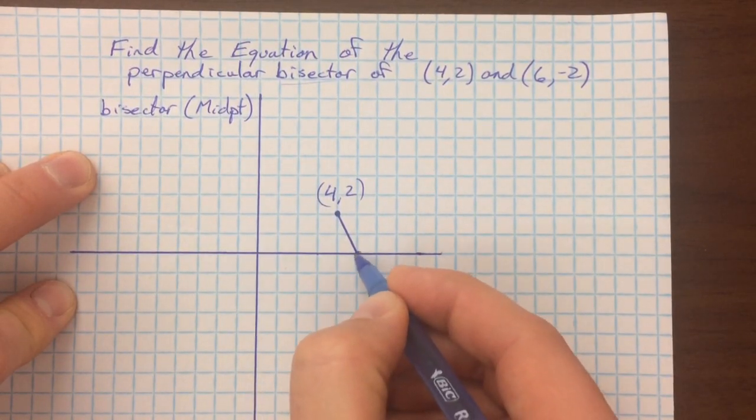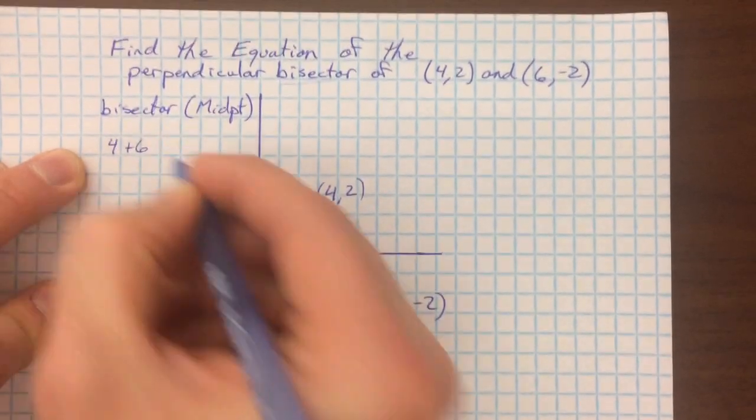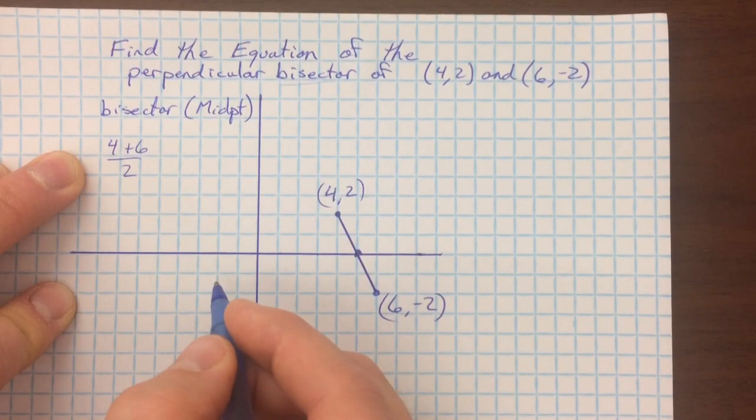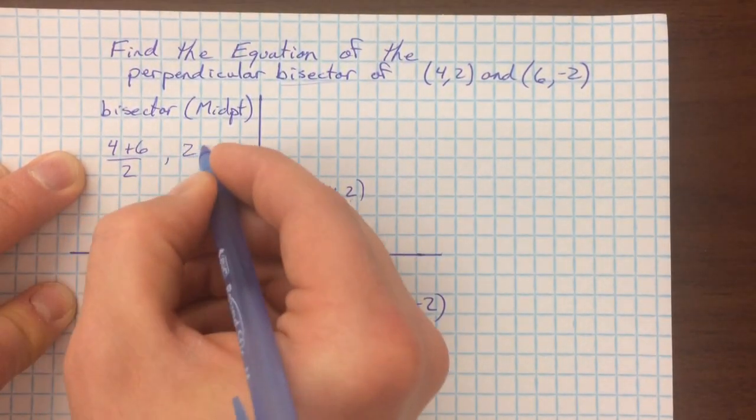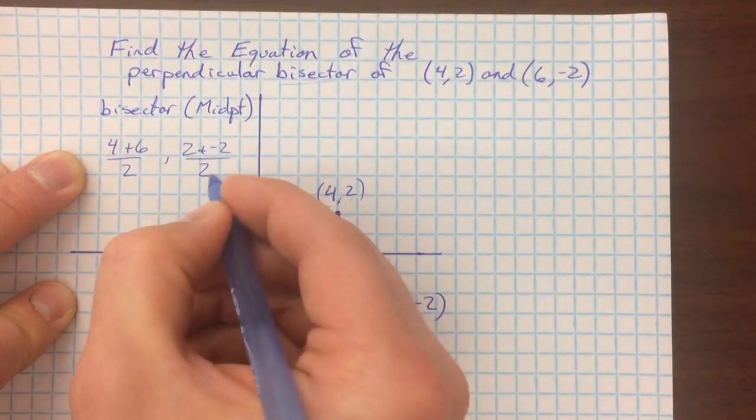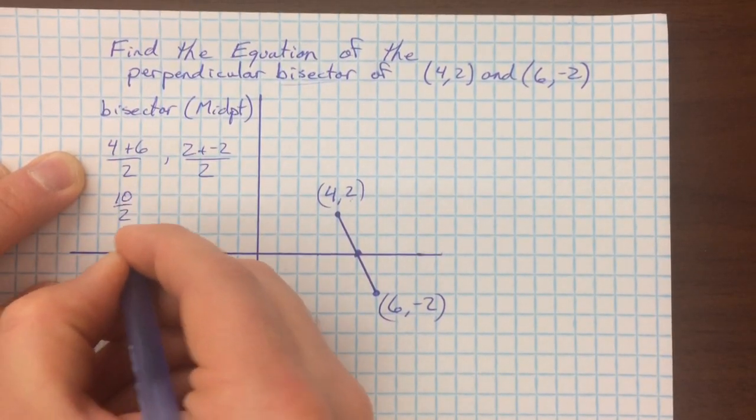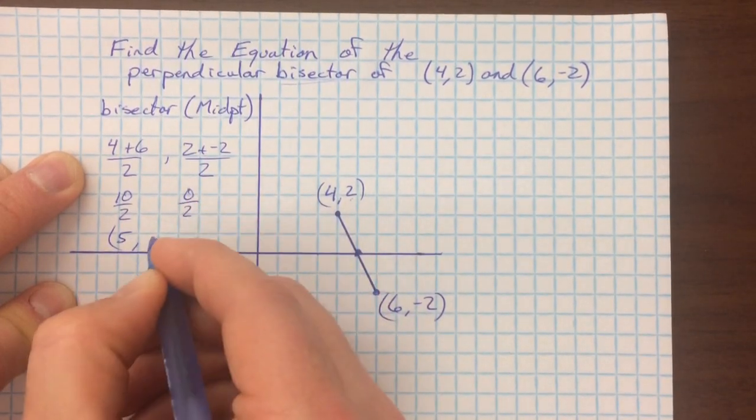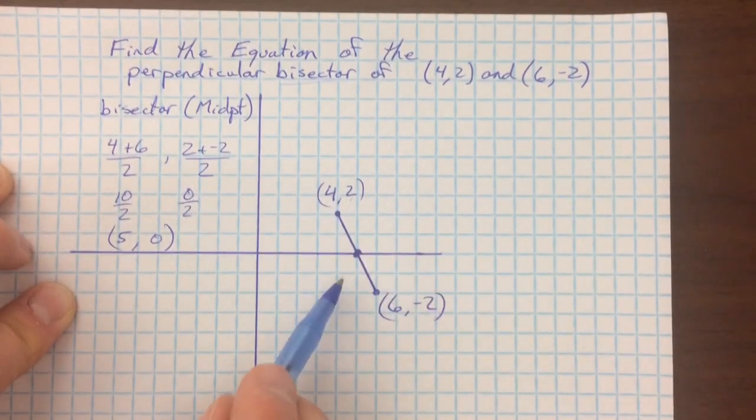Visually, I can see it's going to be here. But if I find the average x, I'm taking the two x's, 4 and 6, adding them up, dividing by 2. If I find the average y, 2 plus negative 2, divided by 2. That gives me 10 divided by 2, which is 5, and 0 divided by 2, which is 0. So, (5,0) is the point I want my line to go through.